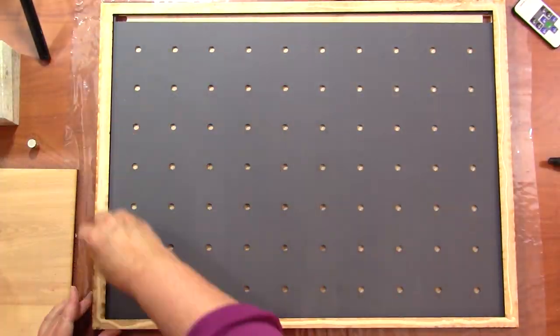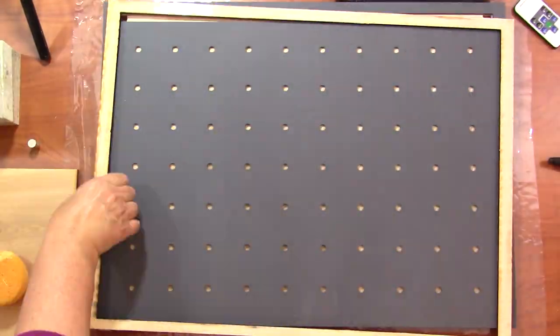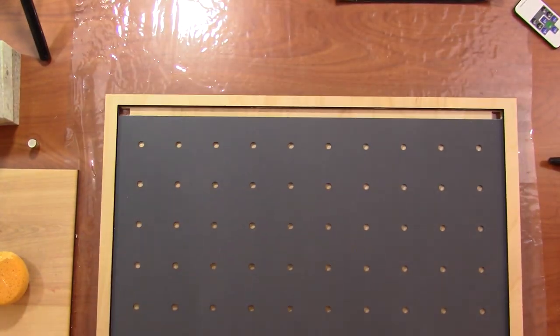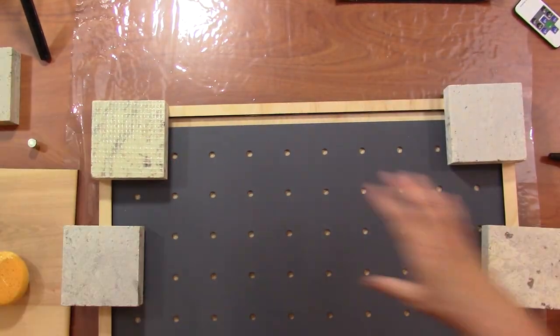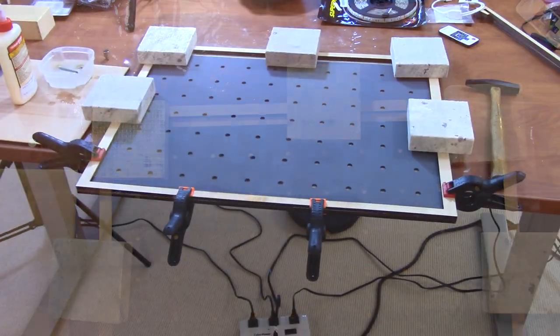When that's dry I can add the strip on the top. The magnet layer is eighth inch thick plywood. That's the thickness of my magnets and the rest of it's quarter inch.